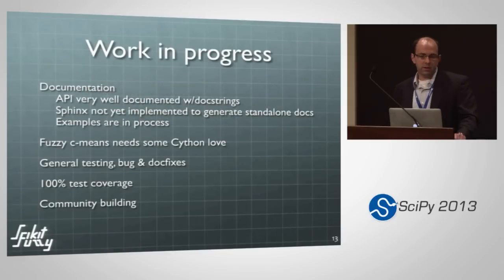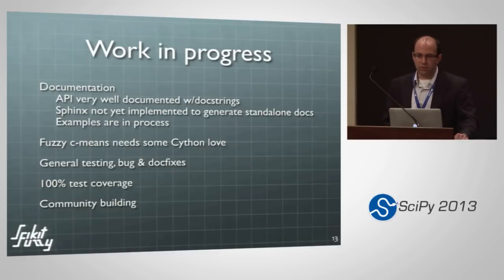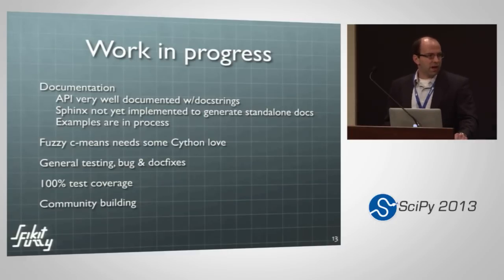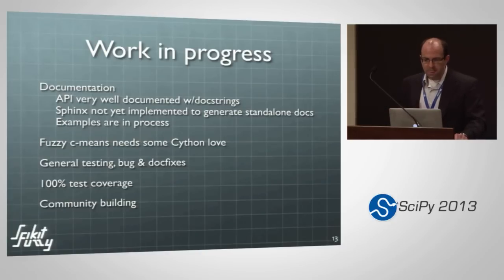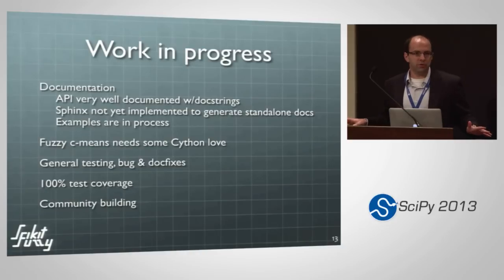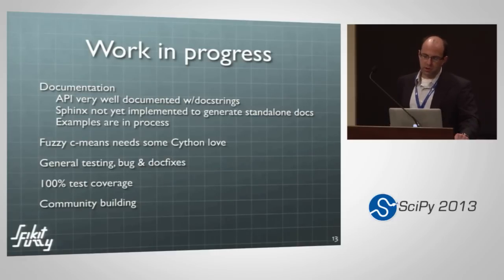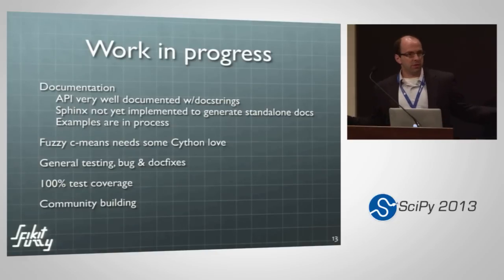The API is very well documented, but there isn't yet a Sphinx setup to create standalone documentation — though the doc strings are all there. Examples are in process, and more examples from the community would be very welcome. The fuzzy C-means needs some Cython love or refactoring — it's more or less a proof of concept right now, but if it got fast enough it could potentially be contributed to scikit-learn. The goal is 100% test coverage — we're there for most key sub-packages but not fully across the entire thing yet. Community building is a significant part of why I'm here today.